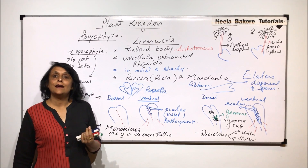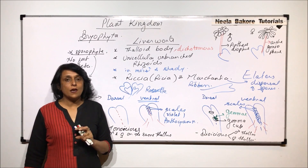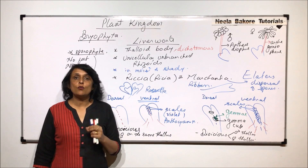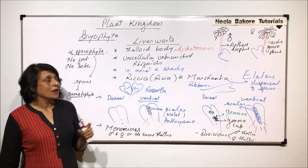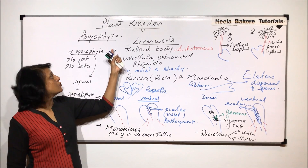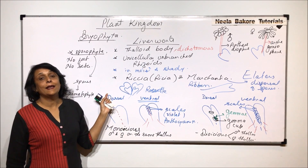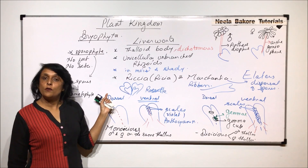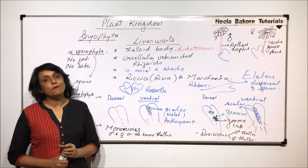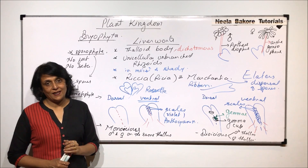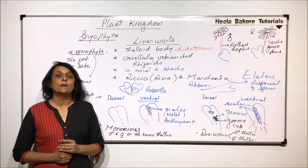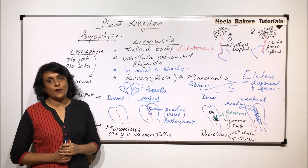Funaria is slightly more advanced because its body was differentiated into root, stem, and leaf-like structures, though it still lacks vascular tissue like all bryophytes, and requires water for fertilization. So bryophytes are termed the amphibians of the plant kingdom. From the next video we will start with the other group, that is Pteridophyta.